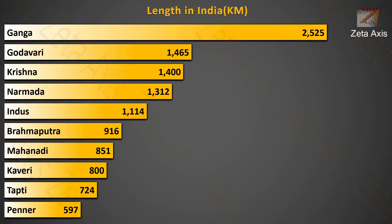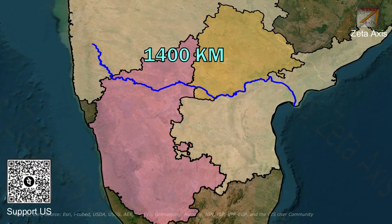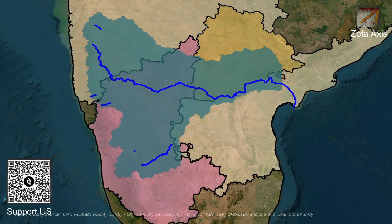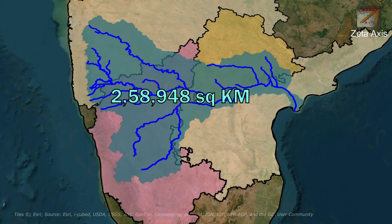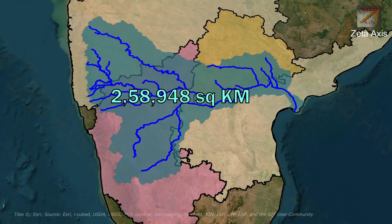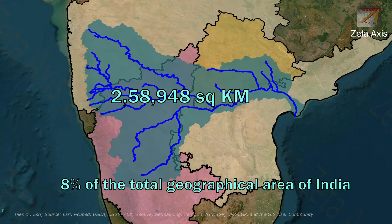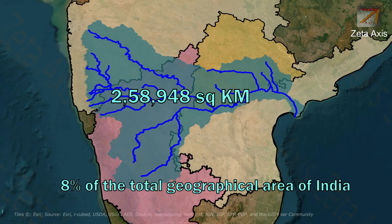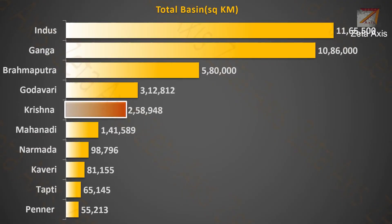However, it is the 3rd longest river flowing within Indian territory, after Ganga and Godavari. The Krishna River Basin extends over an area of 258,948 km², which is nearly 8% of the total geographical area of India. The Krishna River Basin is the 5th largest river basin for rivers flowing through India.